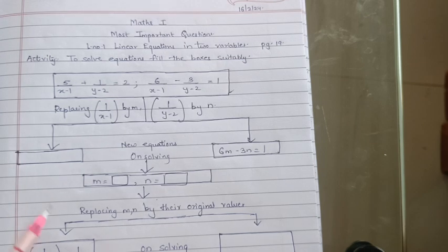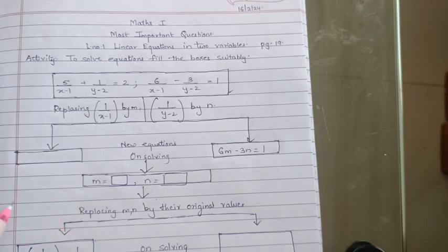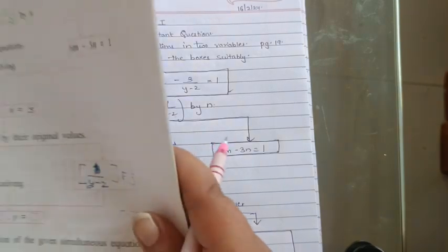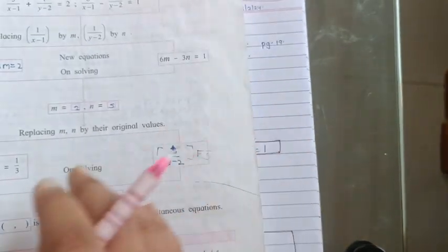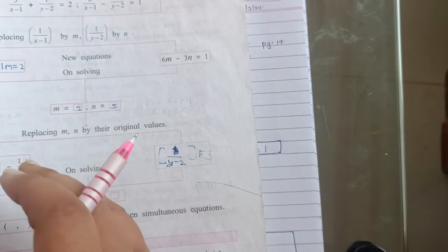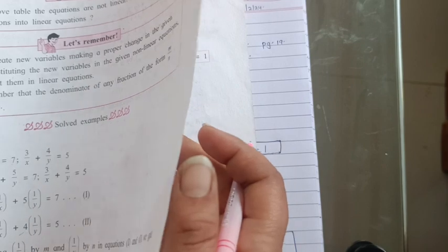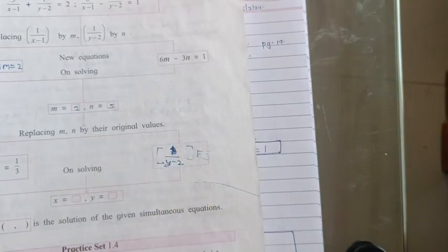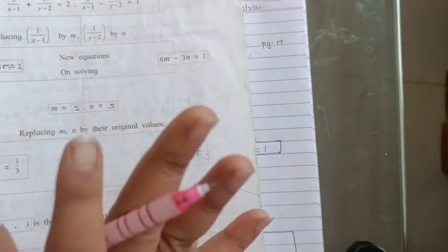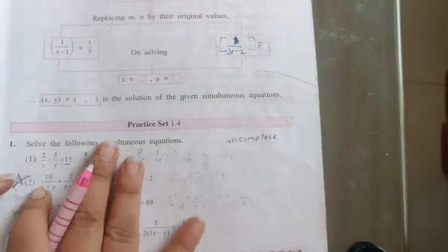We have completed the practice set of 1.3. We have done example number 1 and 2, page number 17 and 18. We have completed the activity question. This is practice set of 1.4.